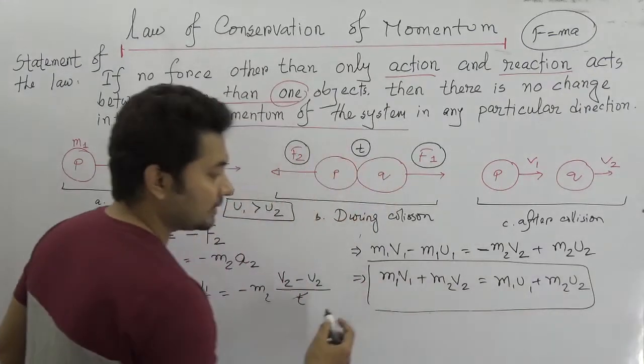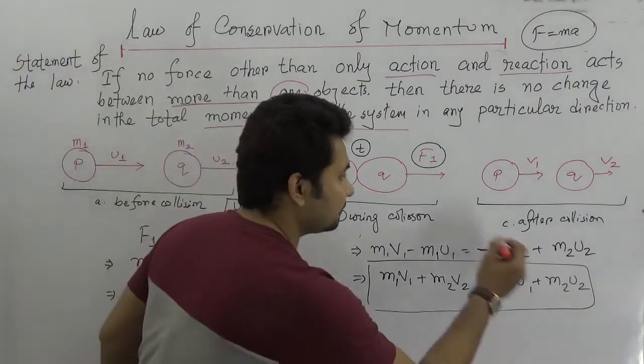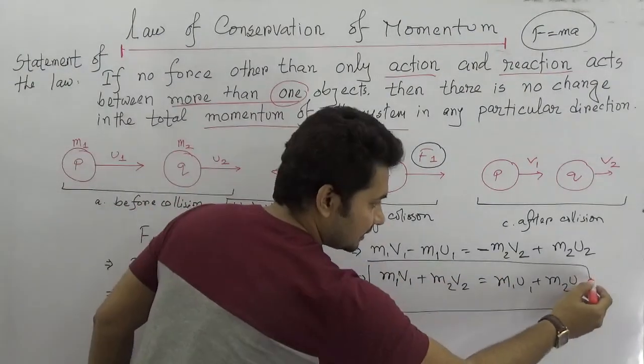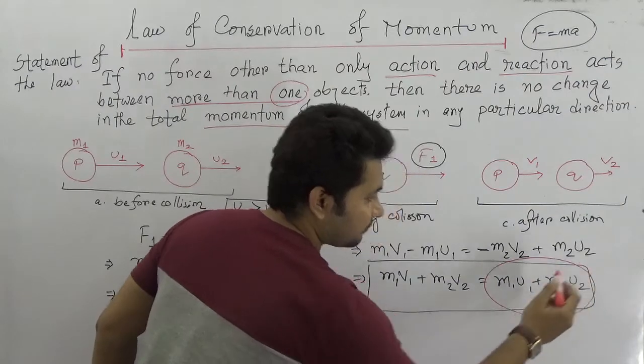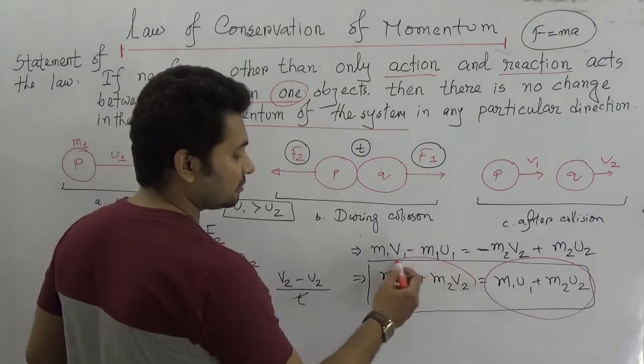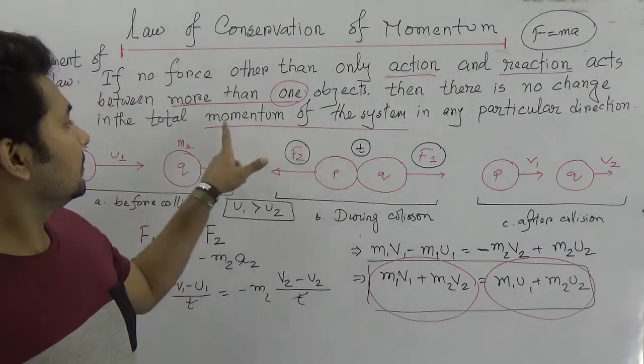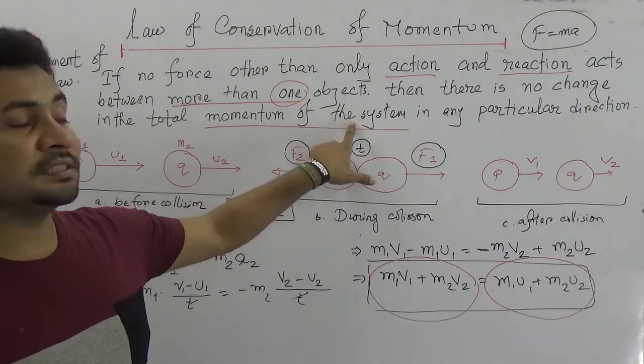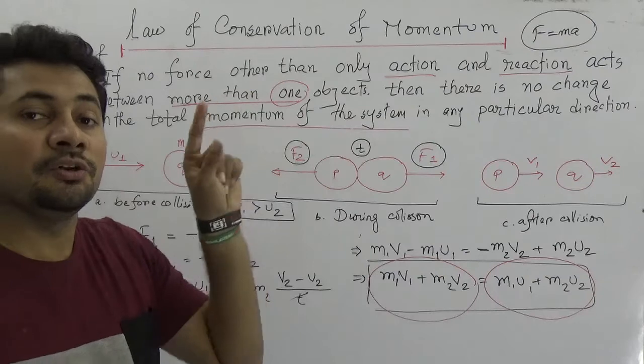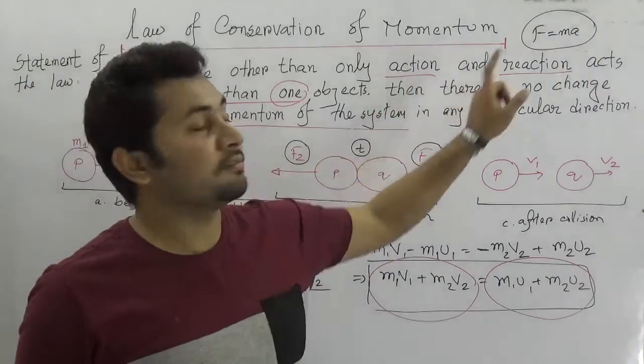From this equation we can conclude for these two bodies P and Q, the summation of M1U1 and M2U2 is equal to the summation of M1V1 and M2V2. It means the total momentum of the system will never change if there is no other force applied other than action and reaction.